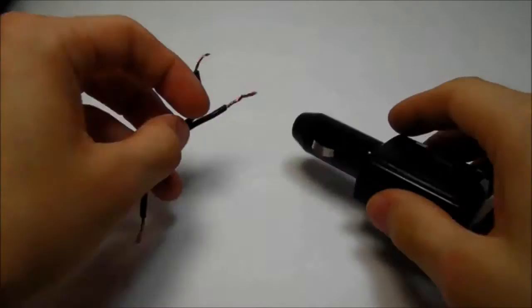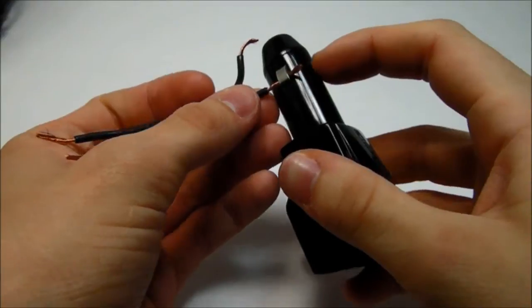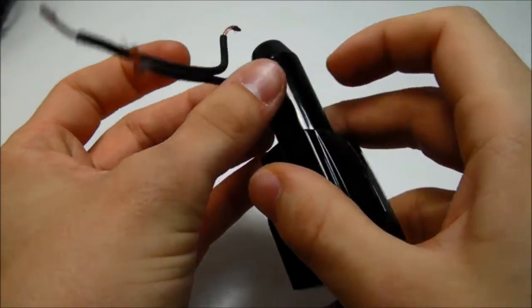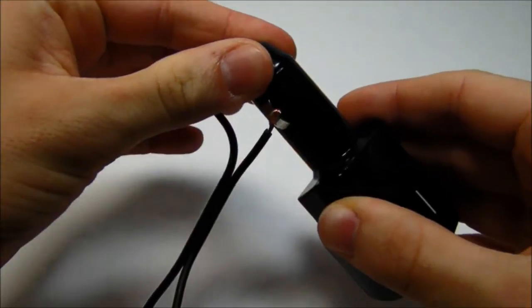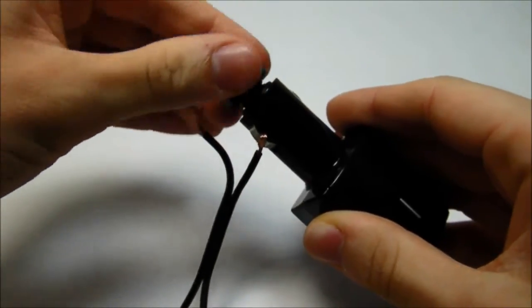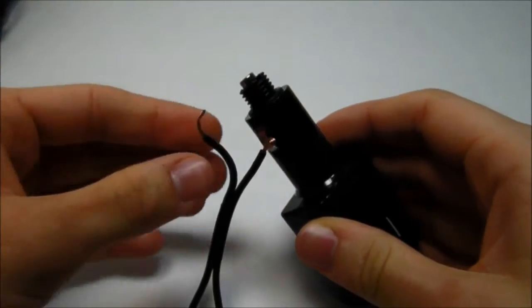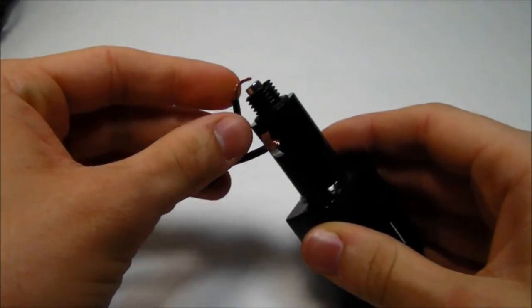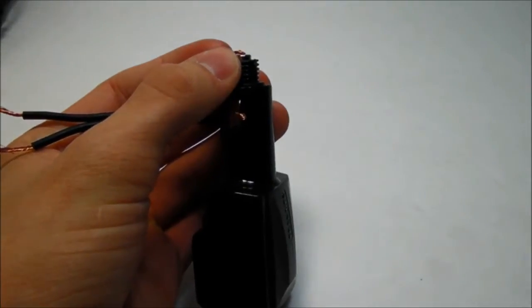To start off, take your negative wire and connect it to the negative part of the adapter. Then unscrew the top. Lay your positive wire on top and tape them in place.